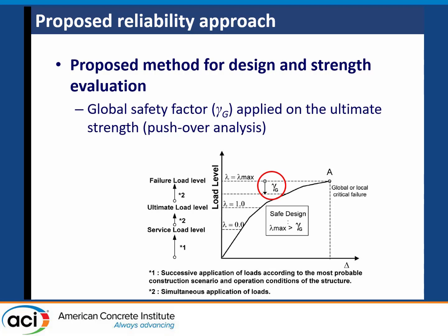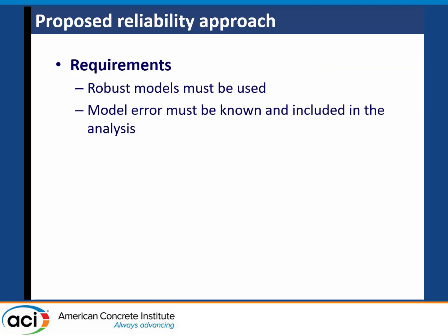What we're proposing is to perform this analysis up to failure and compute a global strength factor — not just a load factor, but a strength factor that includes the variability of your software and the variability of your analysis — in a rational way. This gives you a factored ultimate load level, with lambda equal to one being the factored load level you want to reach.